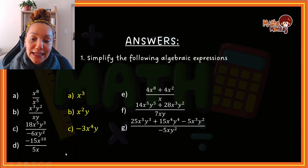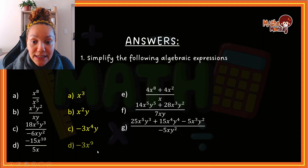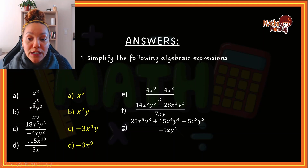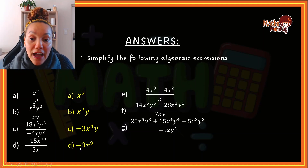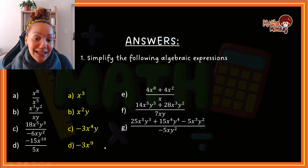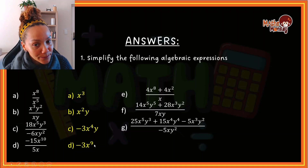The next one was also sign, number, letter: negative divided by positive is negative; 15 divided by 5 is 3; and 10 minus 1 gives us x to the power of 9.